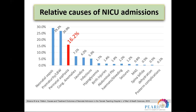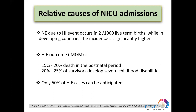HIE accounts for about 16% of neonatal admissions — the third most common cause after neonatal sepsis and prematurity. Neonatal encephalopathy due to hypoxia ischemia occurs in two out of every 1,000 live births, while in developing countries this number is higher. Regarding outcomes, up to 20% will die in the postnatal period, and up to 25% of severe HIE cases will have severe childhood disabilities including cerebral palsy and cognitive impairment. Only 50% of HIE cases can be anticipated.